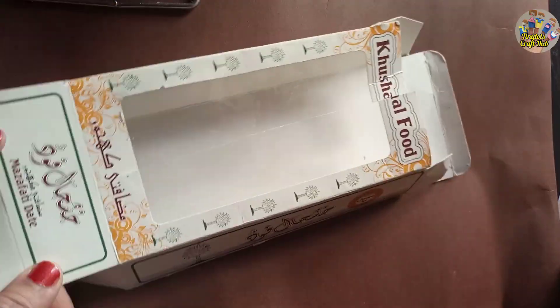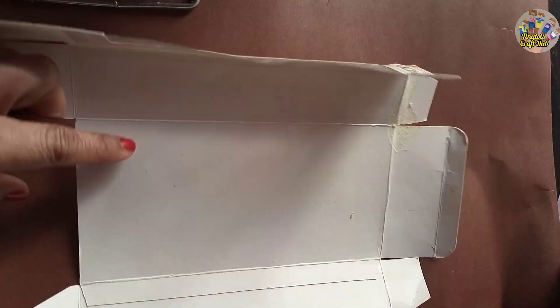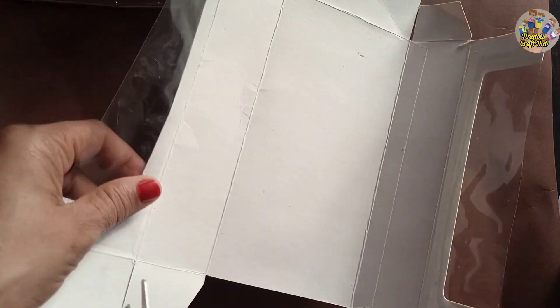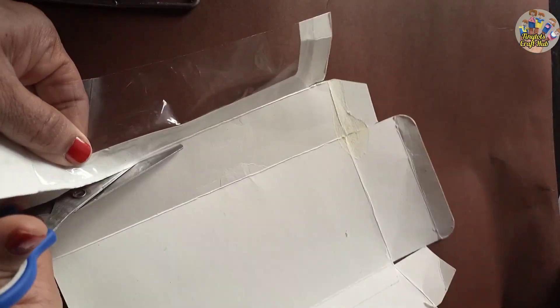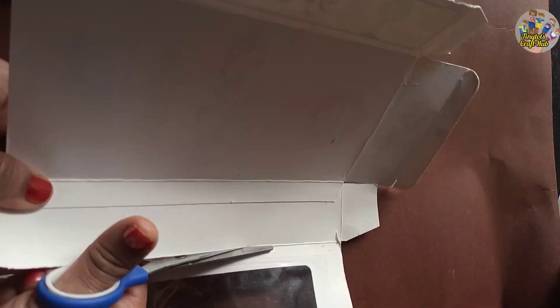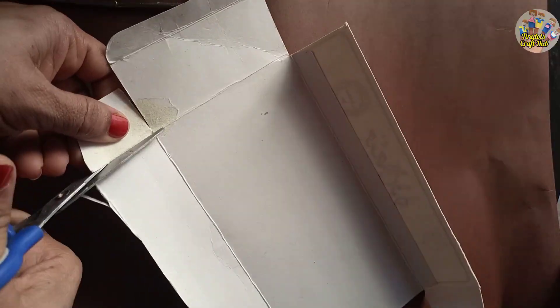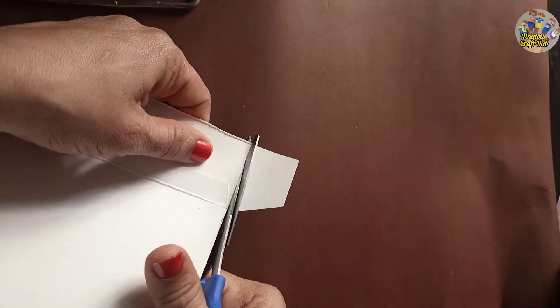You will cut it from the upside and you can take any small box or cardboard, but I'm taking this box because it's white from inside so it will be easy to draw on. Cut it from both sides - upside and downside, right and left also.